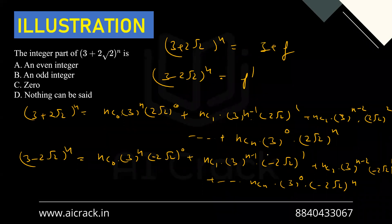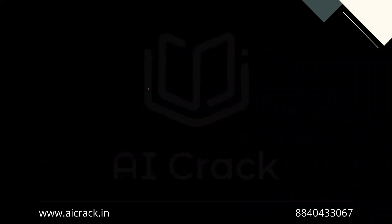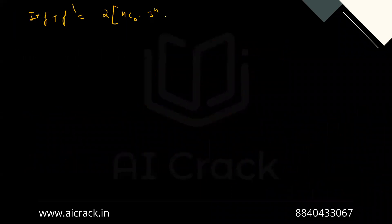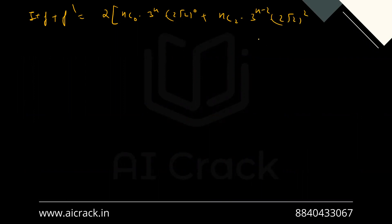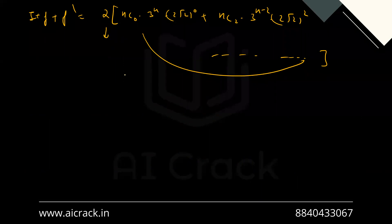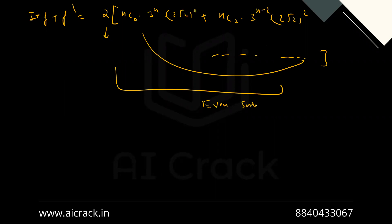So I + f + f' = 2·[nC0·3^n + nC2·3^(n-2)·(2√2)² + ...], which is 2 times a sum of integer terms. Therefore the right-hand side is an even integer. Since I + f + f' is an even integer, f + f' must be an integer to make the whole expression integer.